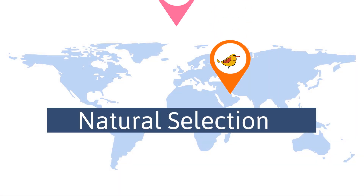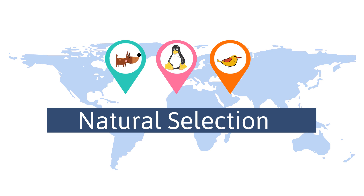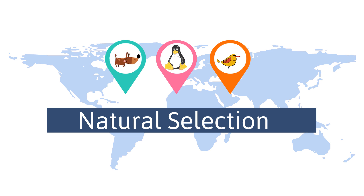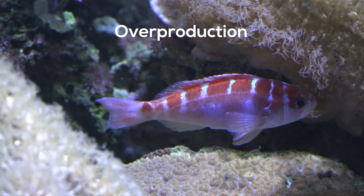One mechanism he proposed to support his theory that life descended from a common ancestor was natural selection. Natural selection has several components.